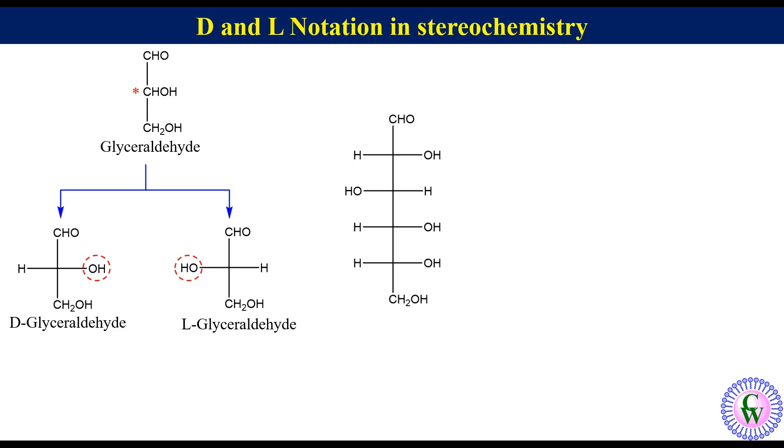Let's have glucose molecule. It has four chiral centers. For determining capital D L configuration we have to focus on the bottom most chiral center. Here we can see that the OH is on the right so it is D glucose.